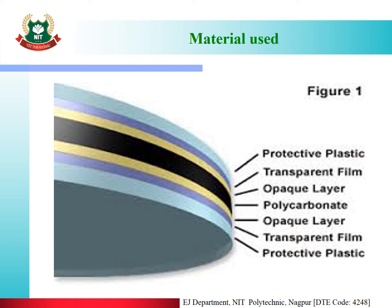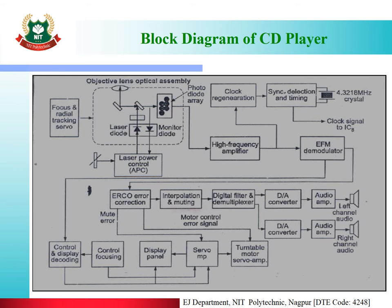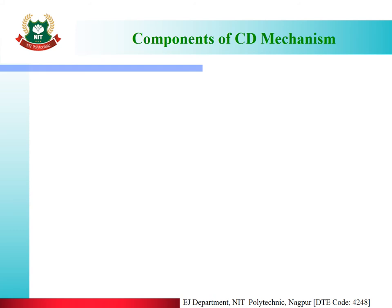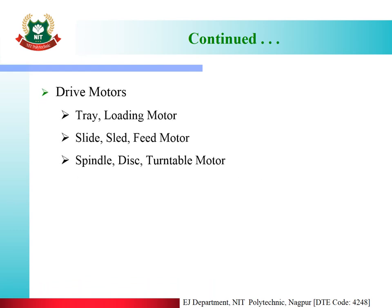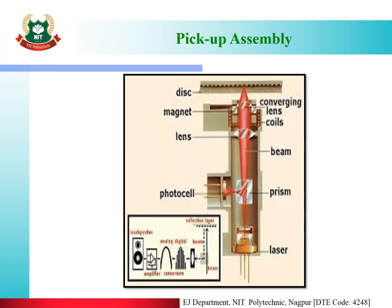Now the block diagram of CD player: The components include CD mechanism, CD pickup assembly, CD lenses — which are collimation lens, concave lens, objective lens, and cylindrical lens — and drive motors including tray loading motor, slide/sled/feed motor, and spindle/disc/turntable motor, plus a gear system.